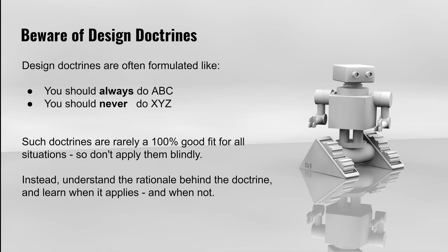Just a small warning towards the end of this video: be careful with design advice that is formulated as doctrines. Typically, doctrines follow forms similar to these two statements: 'you should always do A, B, C' or 'you should never do X, Y, Z.' In practice, you might sometimes actually have to not do A, B, C even if the doctrine says you always should, or you may actually need to do X, Y, Z even if the doctrine says you never should. Reality tends not to be so binary — if you just follow these design doctrines blindly, you may not always end up with the best result. This is one of my main points in conscious design, so I will get back to that in future videos too.